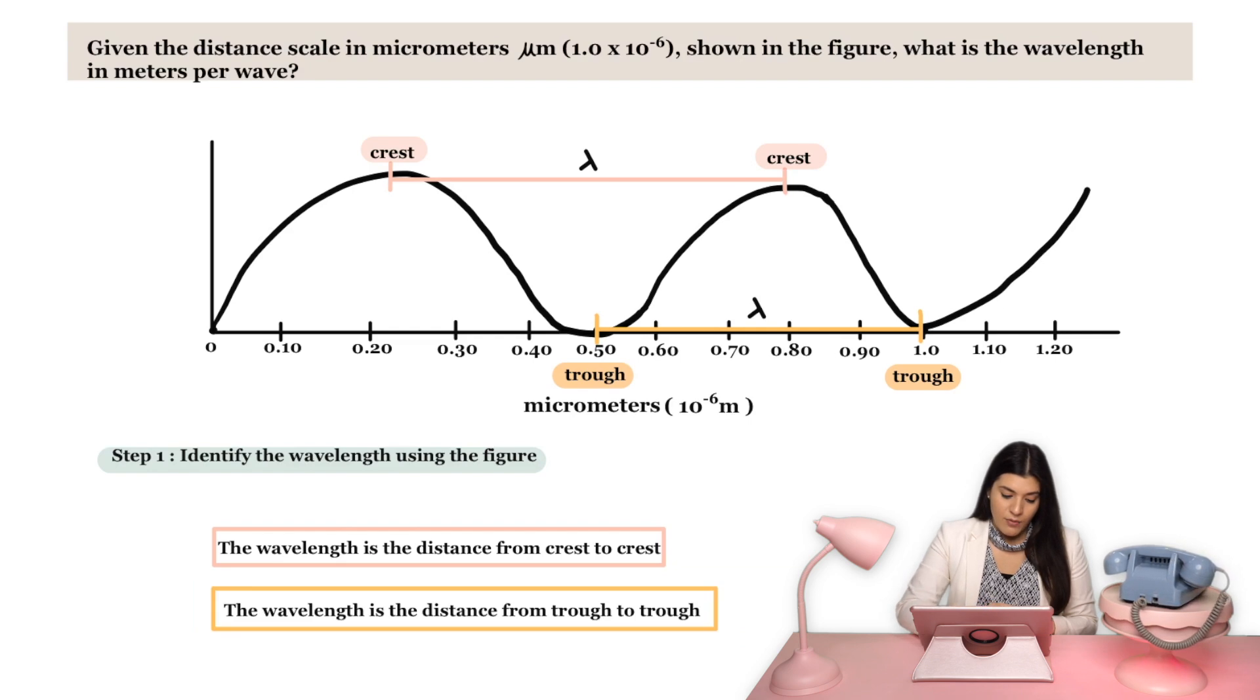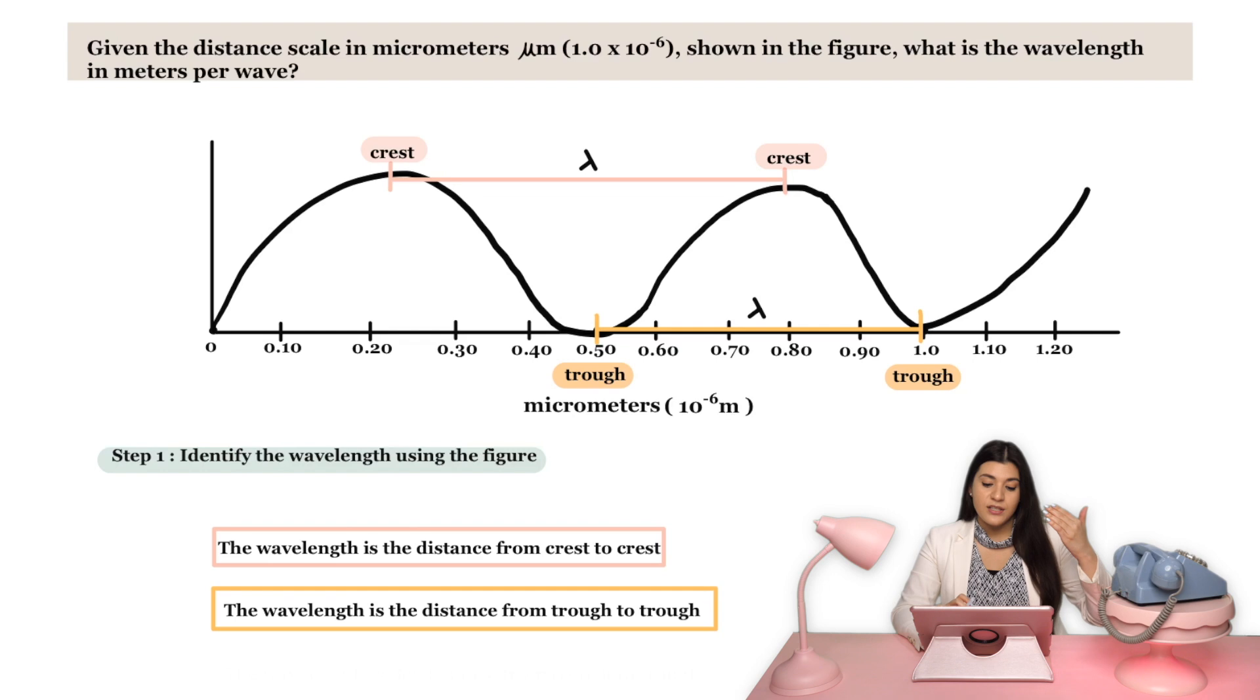Or we can look at it from looking at the distance from trough to trough. The trough is instead the lowest point on that curve or on that wave. So that would have been here and this other trough.